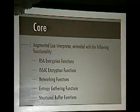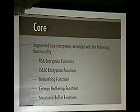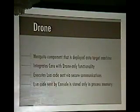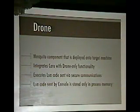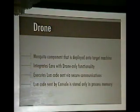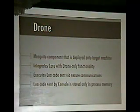Let's talk about core. Core is really nothing more than an augmented Lua interpreter, extended with the following functionalities: RSA encryption functions, ISAAC encryption functions, networking functions, entropy-gathering functions, and structured buffer functions. The drone is the Mosquito component that is deployed onto the target machine. It integrates the core with drone-only functionality — meaning it's a superset of the core. It executes Lua code sent by the console over secure communications, and that Lua code is stored only in process memory.